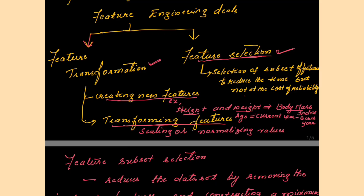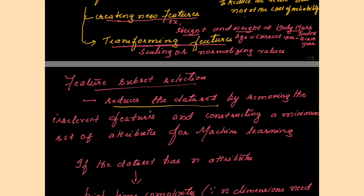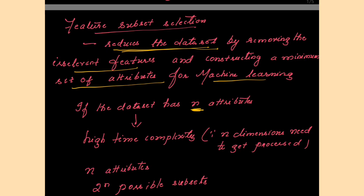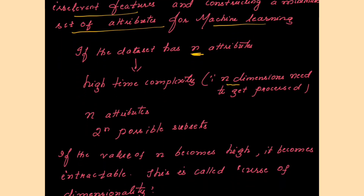Now coming to the second part: feature selection, which is related to dimensionality reduction. It reduces the data set by removing the irrelevant features and constructing a minimum set of attributes for the machine learning model. In dimensionality reduction, you are having more number of features, and some features are irrelevant — you need to identify such irrelevant features. If the data set has n attributes, then n dimensions need to get processed.